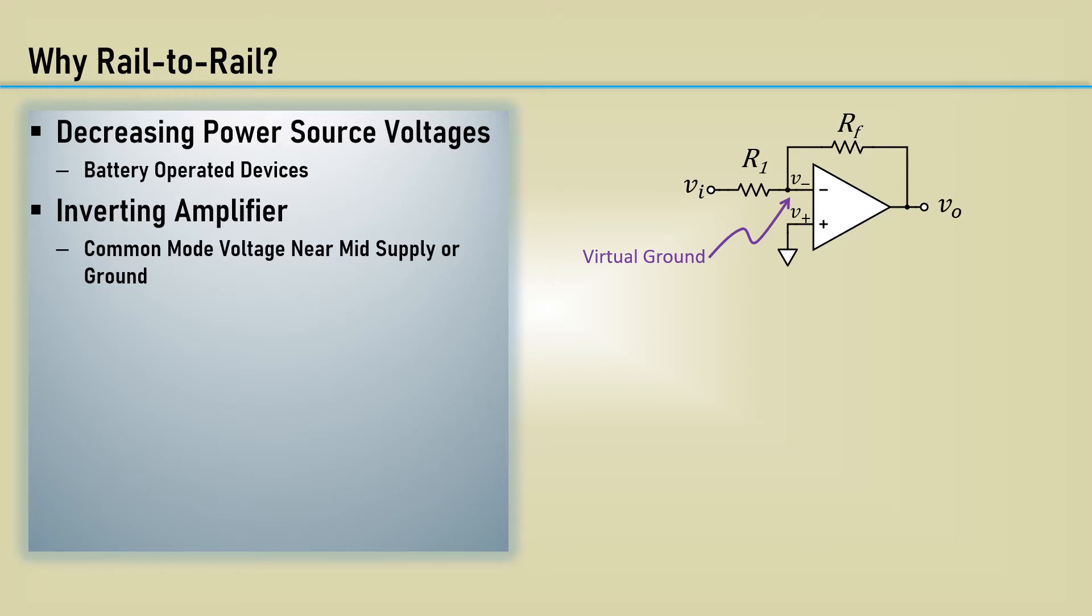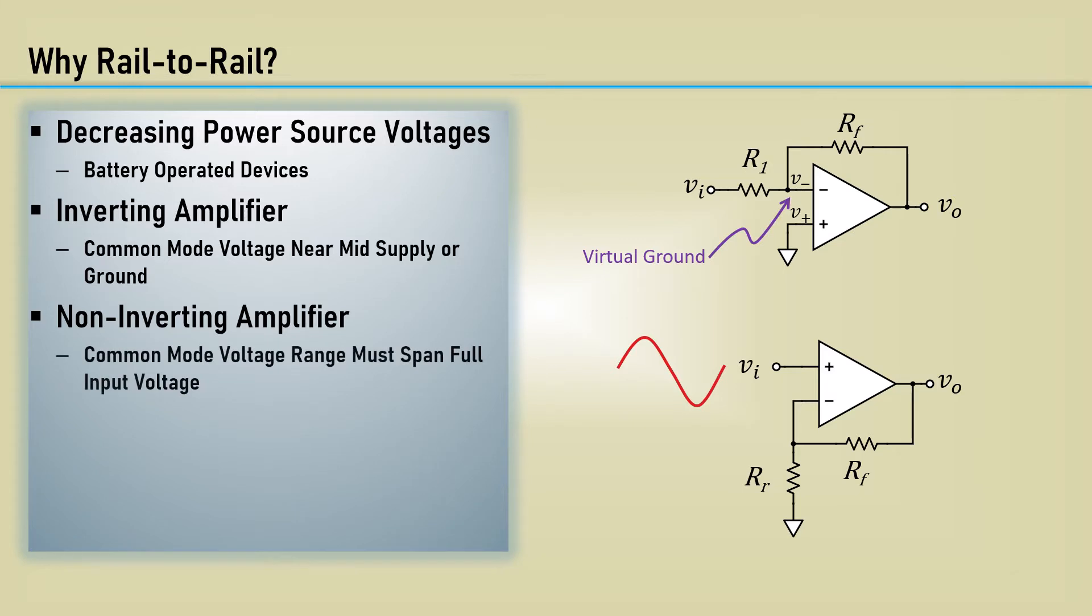Unless the non-inverting input is biased close to the rail, a rail-to-rail op-amp is not needed for an inverting amplifier. The non-inverting amplifier presents the biggest challenge, as its common mode voltage range must span the full input voltage range.